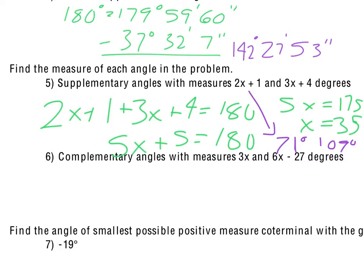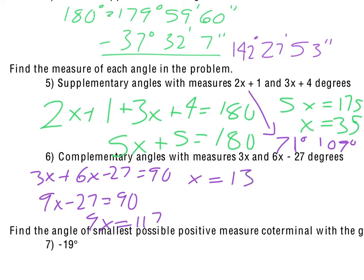Number 6 is the same idea, only complementary angles. So the 3x plus the 6x minus 27 would equal 90. So 9x minus 27 would equal 90. Add the 27 to the 90, and we get 9x equals 117. Divide that by 9, we get x equals 13. However, make sure you don't stop there, that is not the answer. So we plug the 13 in for x. 3 times 13 would be 39, and the 6 times 13 minus the 27 ends up being 51. So 39 and 51, that makes sense because that does add up to 90.